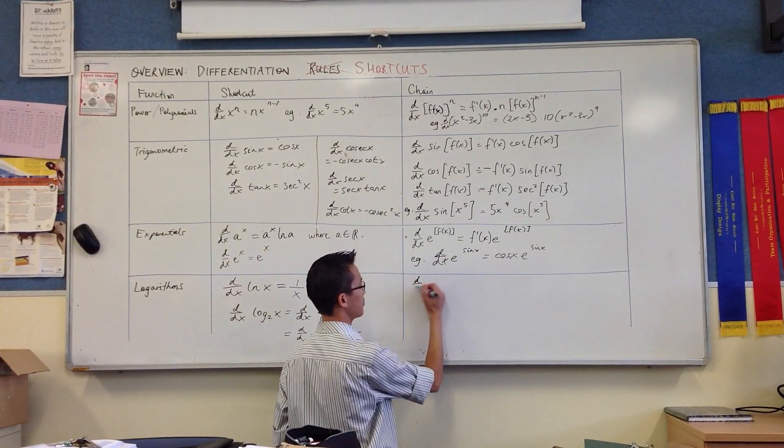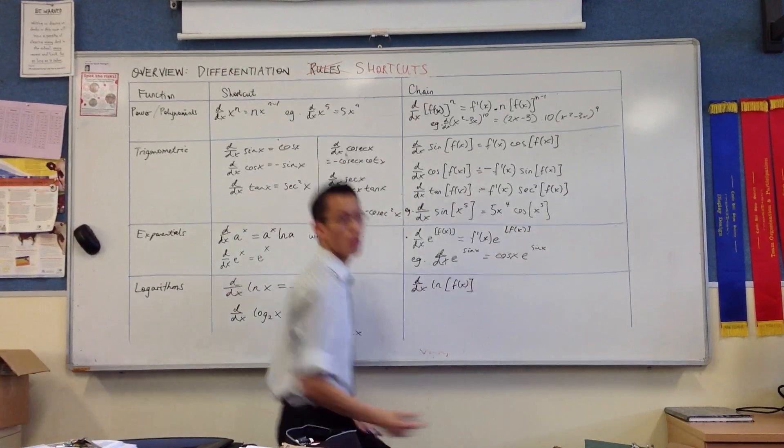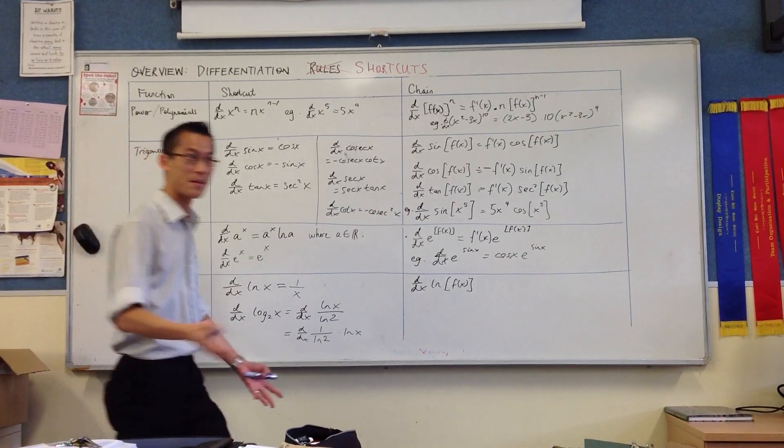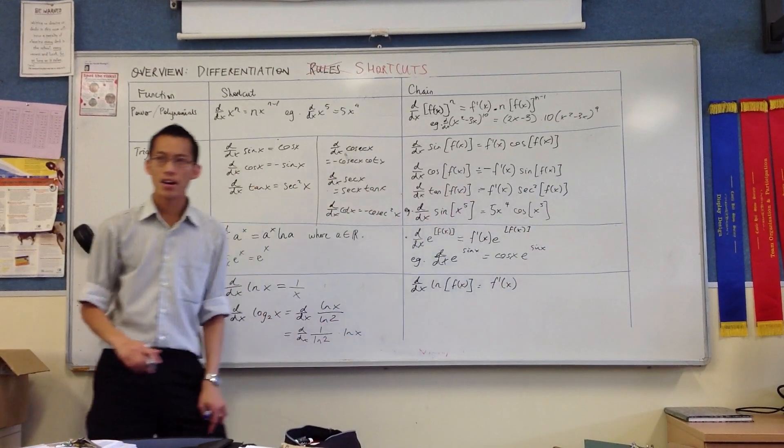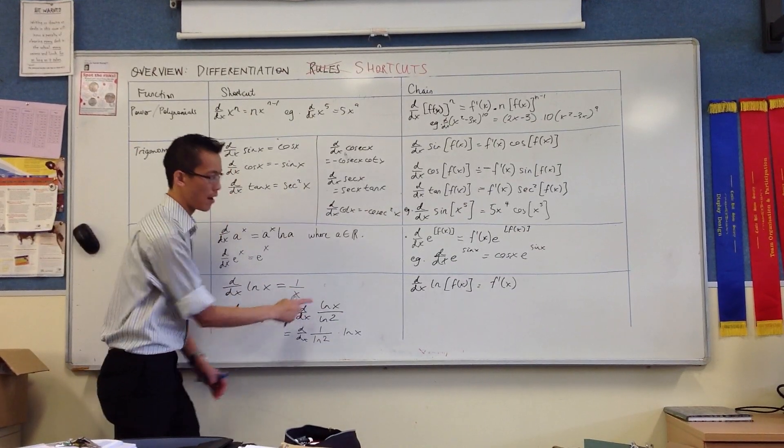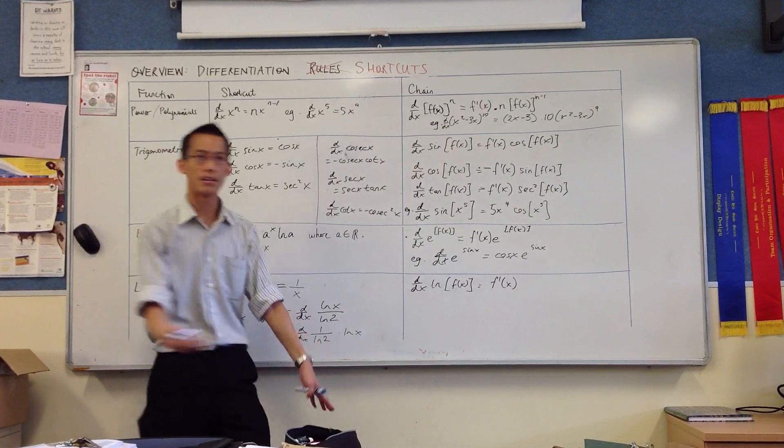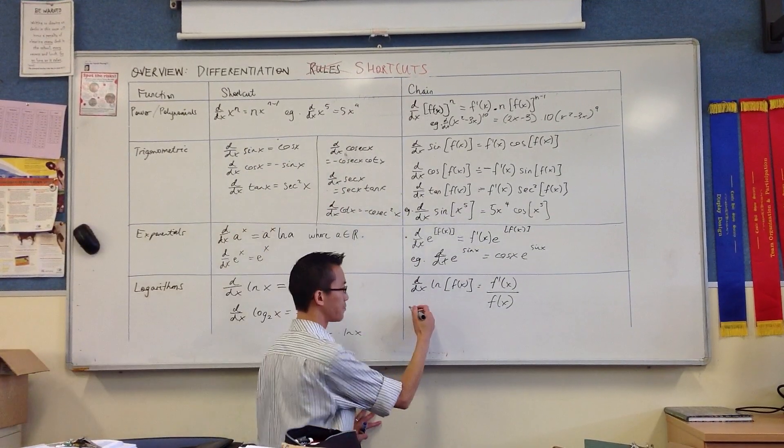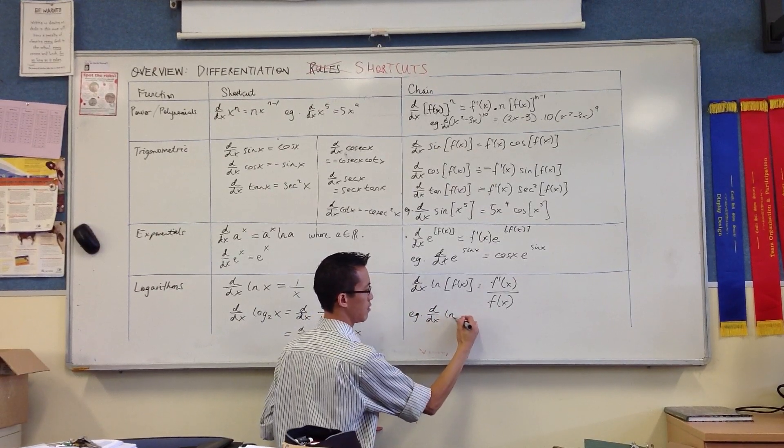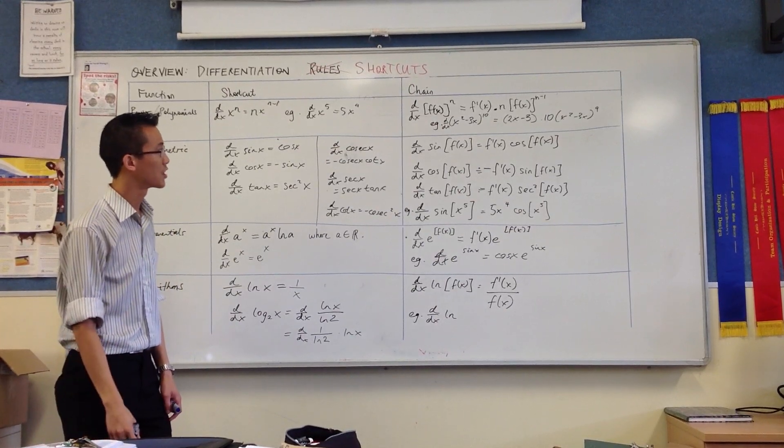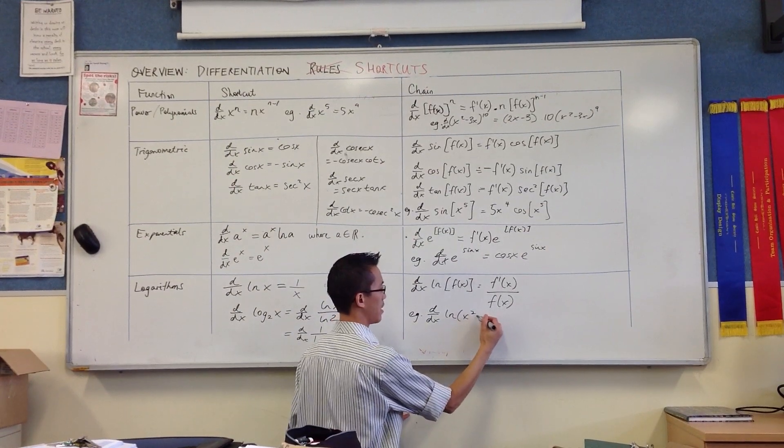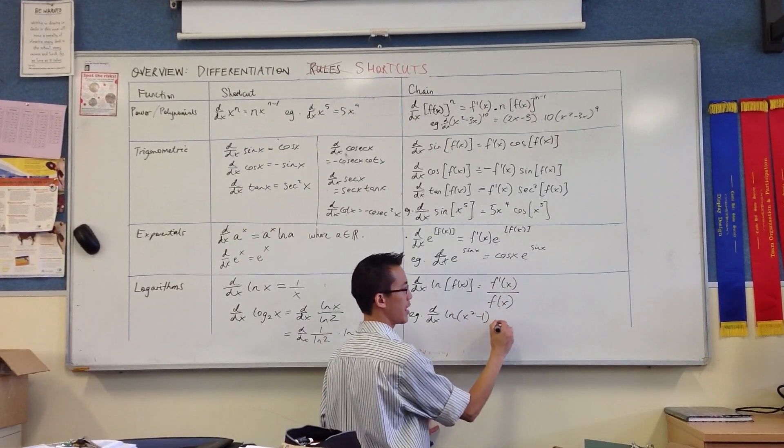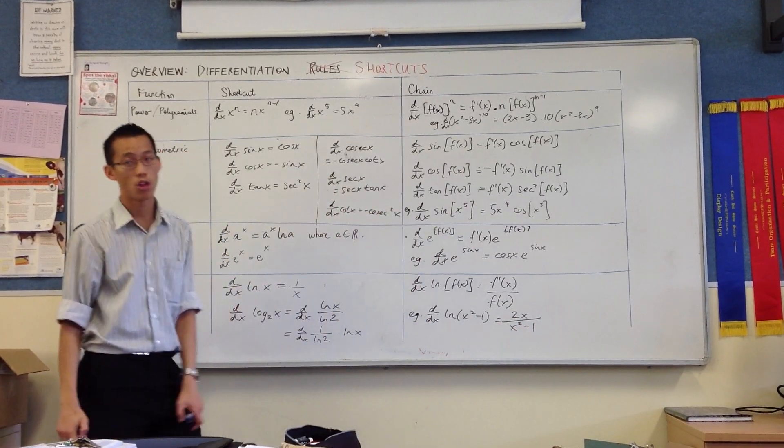Chain rule. If you've got log of some function, any function whatever, this is the last one, start with the inside so it's going to be f dash. Now you do the outside, so multiply by 1 over whatever your function is. But since I'm multiplying by 1 over, that's the same as dividing. So a shorthand way of writing this particular chain rule is f dash over f. Example, let's differentiate log of x squared minus 1. The inside function is just f, so f dash here is 2x, and then you divide by f. Ta-da! It's not too hard.